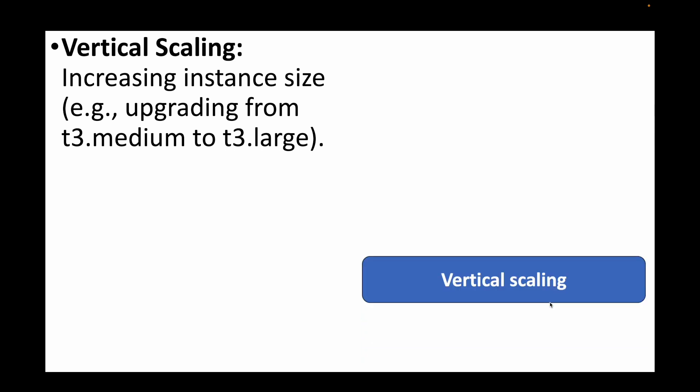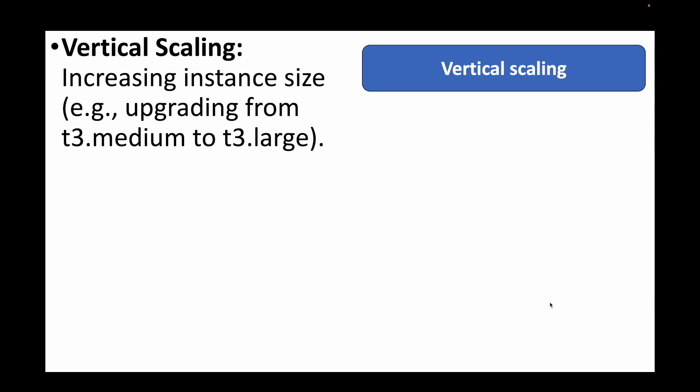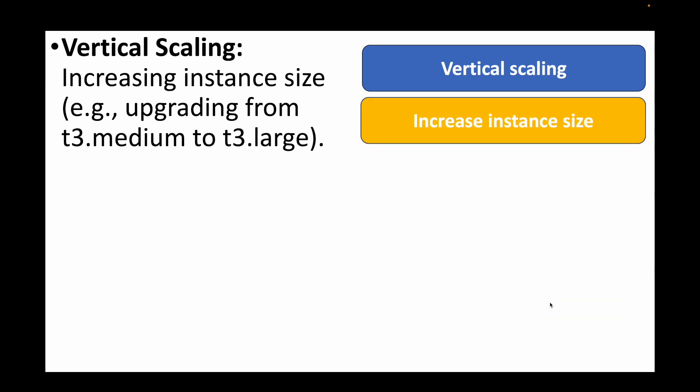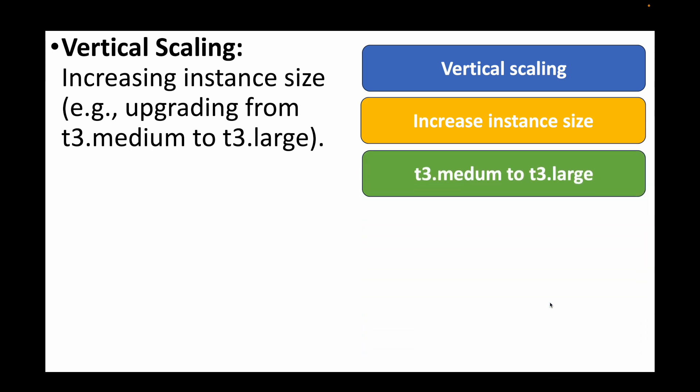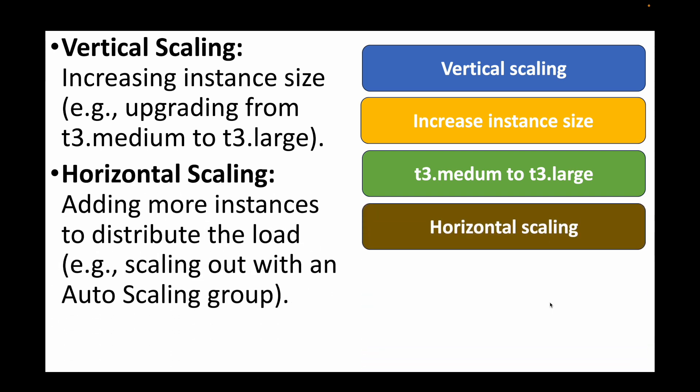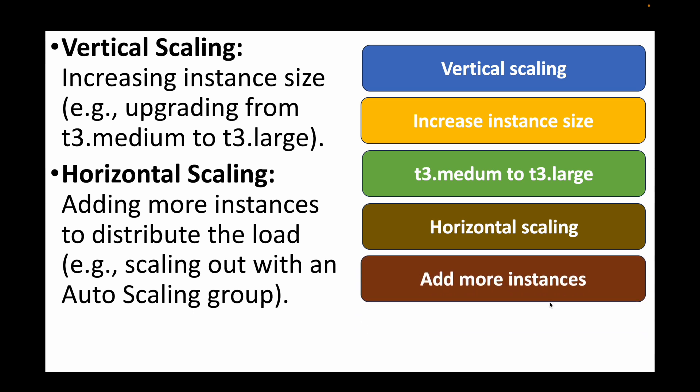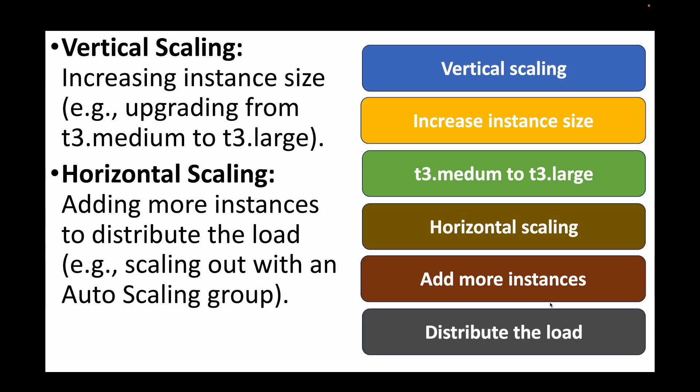The next question is: what is the difference between vertical and horizontal scaling? Vertical scaling is basically changing the instance size — increasing the CPU and memory capacity. For example, if you have an EC2 instance running on t3.medium, you can change that to t3.large, which gives you higher CPU and memory capacity. Horizontal scaling on the other hand is increasing the number of instances itself, adding more instances and distributing the load across them. Vertical scaling increases capacity on existing instances; horizontal scaling adds more instances to your auto scaling groups.